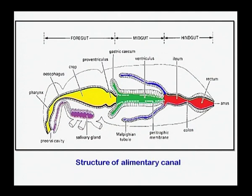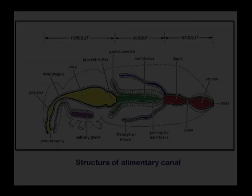This diagram shows the different parts of the alimentary canal — that is the foregut, midgut, and the hindgut. Here you can see the different parts of the alimentary canal.